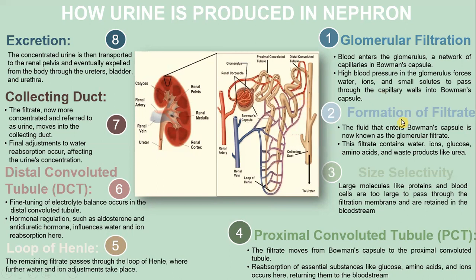Step two: formation of filtrate. The fluid that enters the Bowman's capsule is known as the glomerular filtrate. This filtrate contains water, ions, glucose, amino acids, and waste products like urea. Step three: size selectivity. Large molecules like proteins and blood cells are too large to pass through the filtration membrane and are retained in the bloodstream.